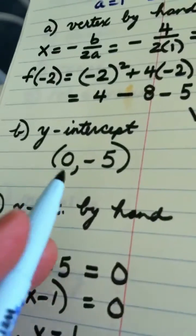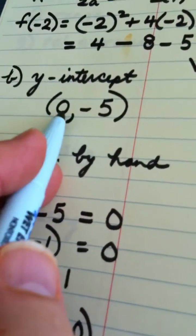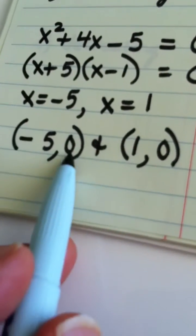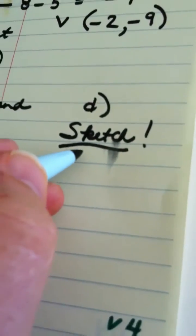Now one of the things I want to point out to you: y-intercepts written as an ordered pair starting with 0, x-intercepts are written as ordered pairs ending with 0. Okay, sketch this graph.